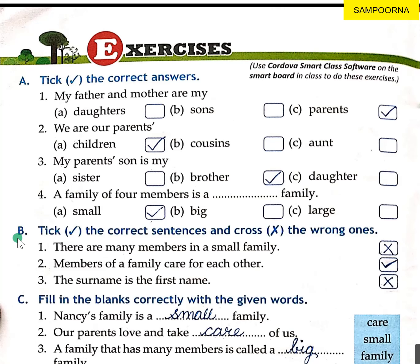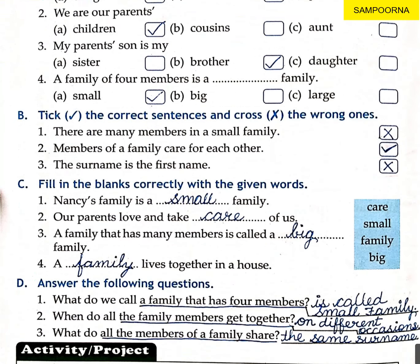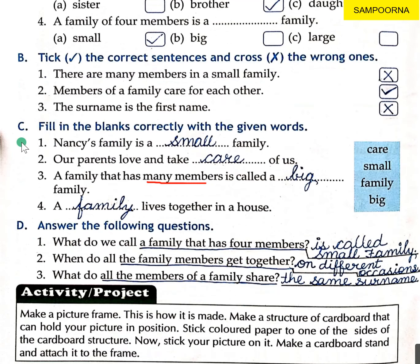Students, you all have to do Exercise B also in your book itself. Exercise C — fill in the blanks correctly with the given words. Number one: Nancy's family is a small family. Number two: our parents love and take care of us. Number three: a family that has many members is called a big family. Number four: a family lives together in a house. Exercise C also, students, you all have to do in the book itself.